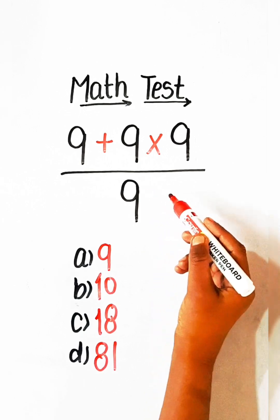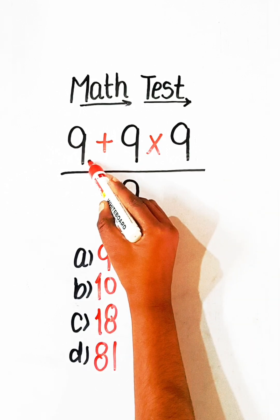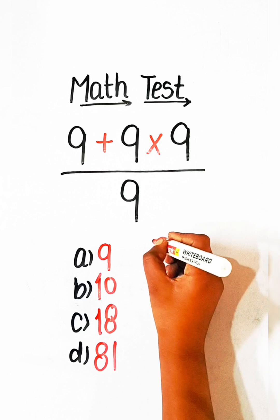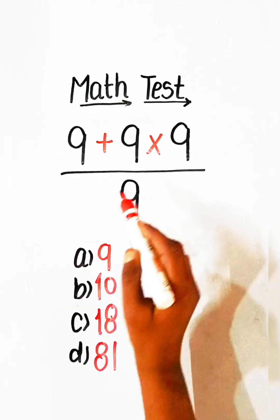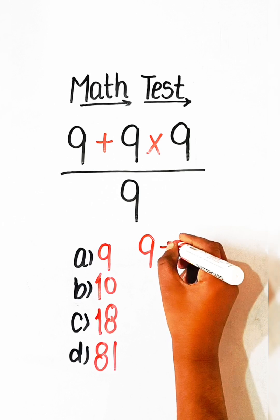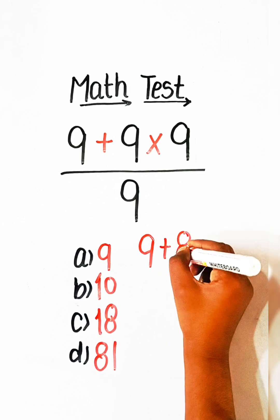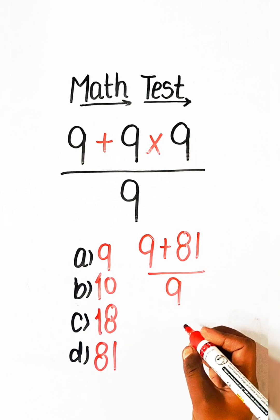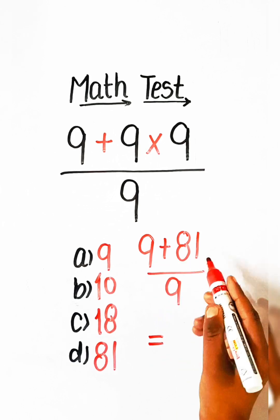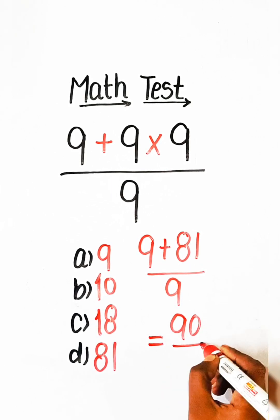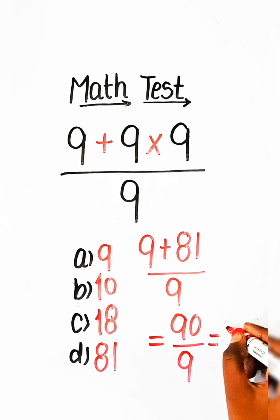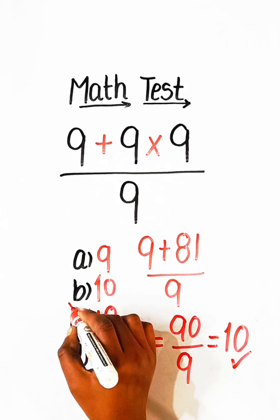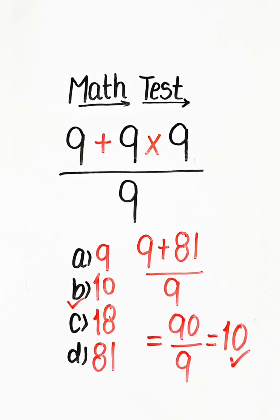So let's solve this. We have 9 plus 9 multiplied by 9, so we solve the upper part first, multiplying first: 9 nines are 81. Then 9 plus 81 is 90, divided by 9, gives us the answer 10. So Option B: 10 is the correct answer.